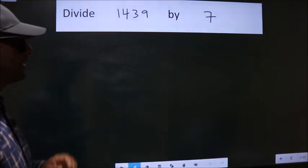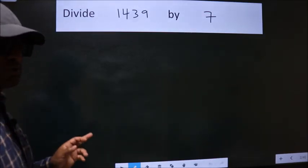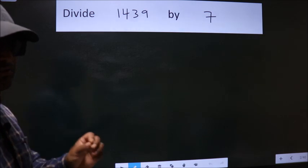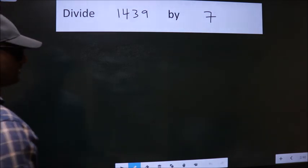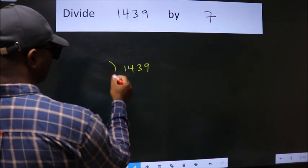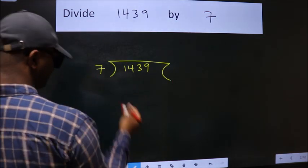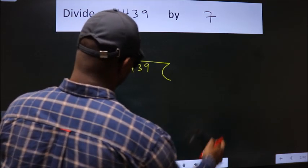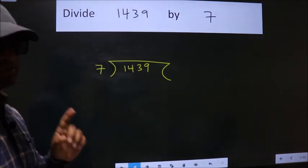Divide 1439 by 7. To do this division, we should frame it in this way: 1439 here, 7 here. This is your step 1.